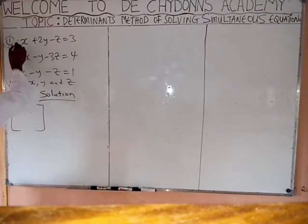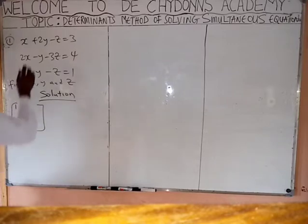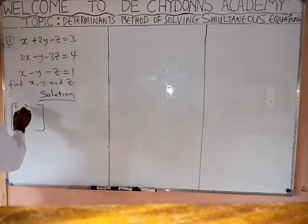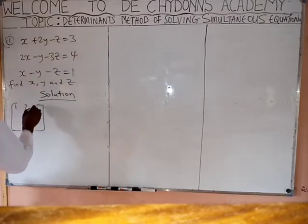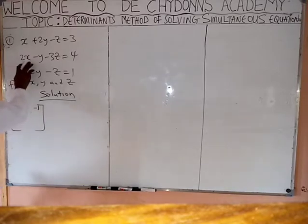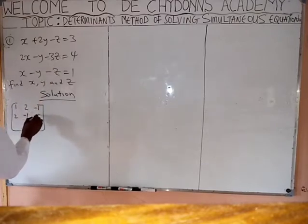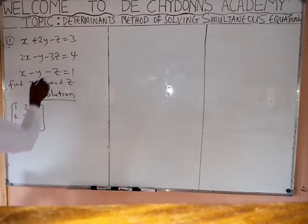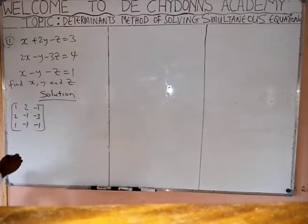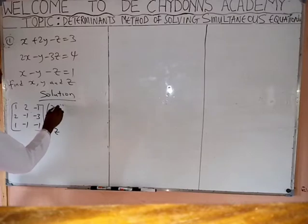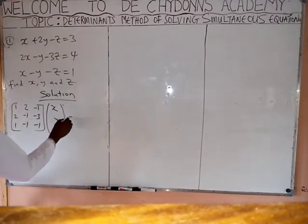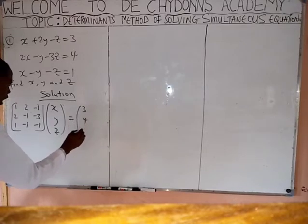The coefficient of x is 1. The coefficient of y is 2. The coefficient of z is minus 1. Then, the coefficient of x is 2, the coefficient of y is minus 1, and the coefficient of z is minus 3. The coefficient of x is 1, the coefficient of y is minus 1, and the coefficient of z is minus 1. Write down the variables x, y, z accordingly as they appear in the equation.